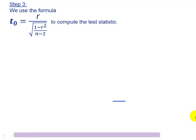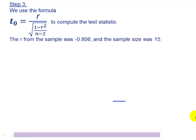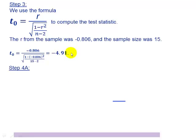For step three, we're finding our test statistic using the formula. The R from our sample was negative 0.806 and our sample size was 15. Here's the calculation by hand of our test statistic — we get negative 4.91.